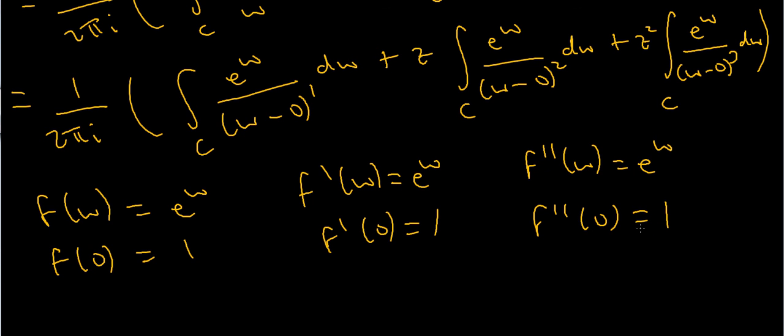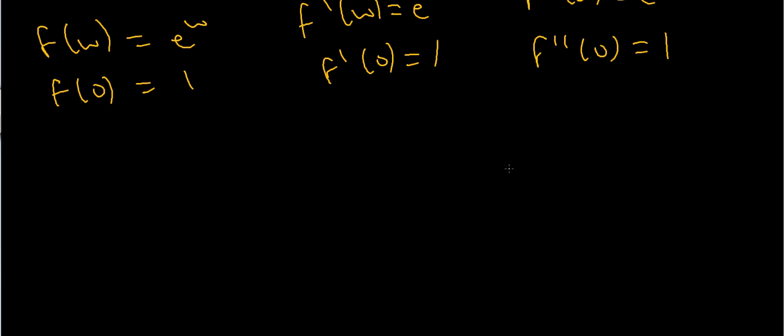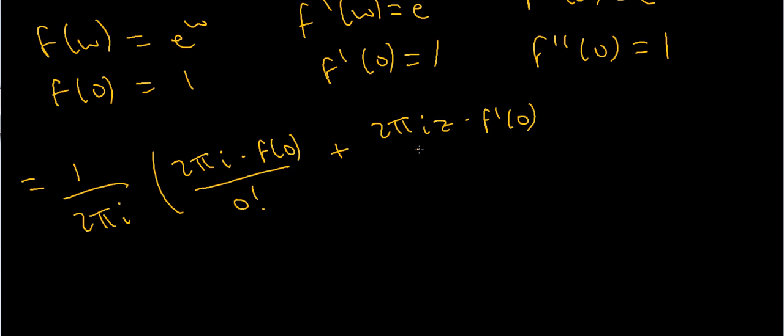Now I've just got to apply Cauchy's integral formula. I've got 1 over 2 pi i times some stuff. Cauchy's integral formula says that I've got to do 2 pi i times f of 0 divided by 0 factorial, plus 2 pi i z times f prime of 0 divided by 1 factorial, plus 2 pi i z squared times f double prime of 0 divided by 2 factorial.